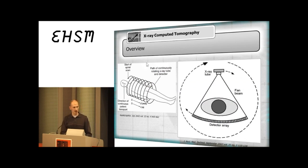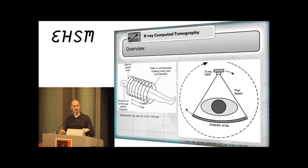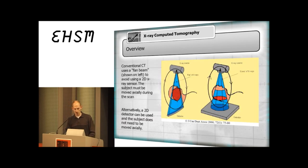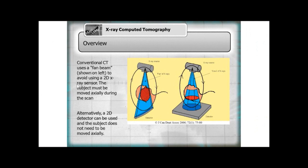Commercial CT scanners scan in a helix — you're on a bed rolling through the scanner while it constantly spins, using a fan beam with a one-dimensional detector array. An easier method is cone beam CT: instead of a fan beam with a 1D detector, you use a cone beam from a standard x-ray tube onto a two-dimensional detector, getting a nice image that's much easier to process.